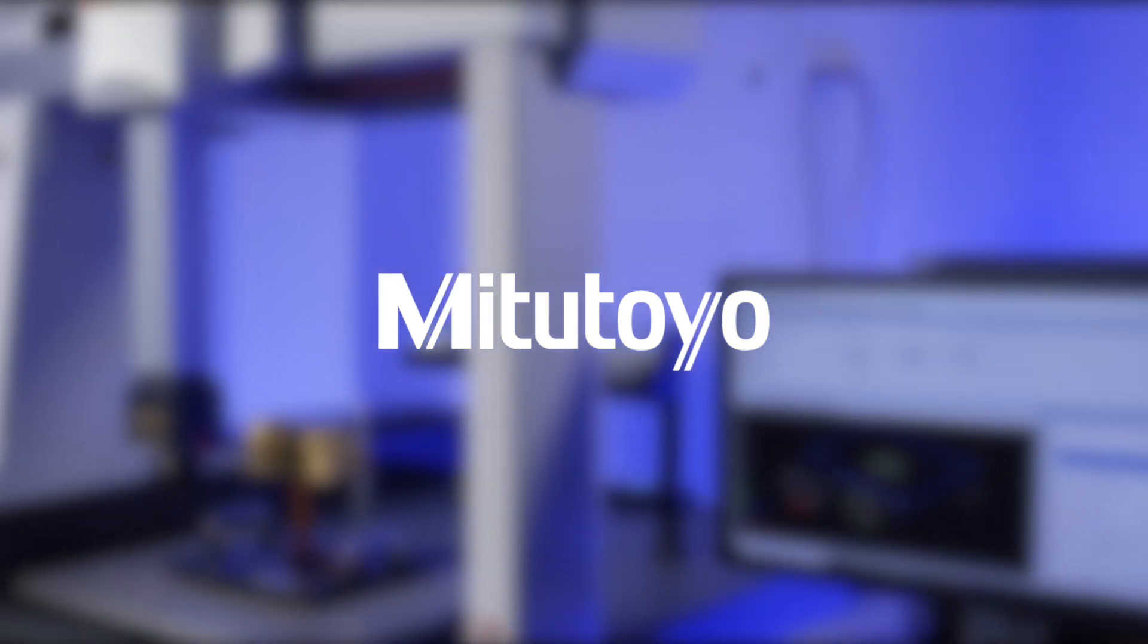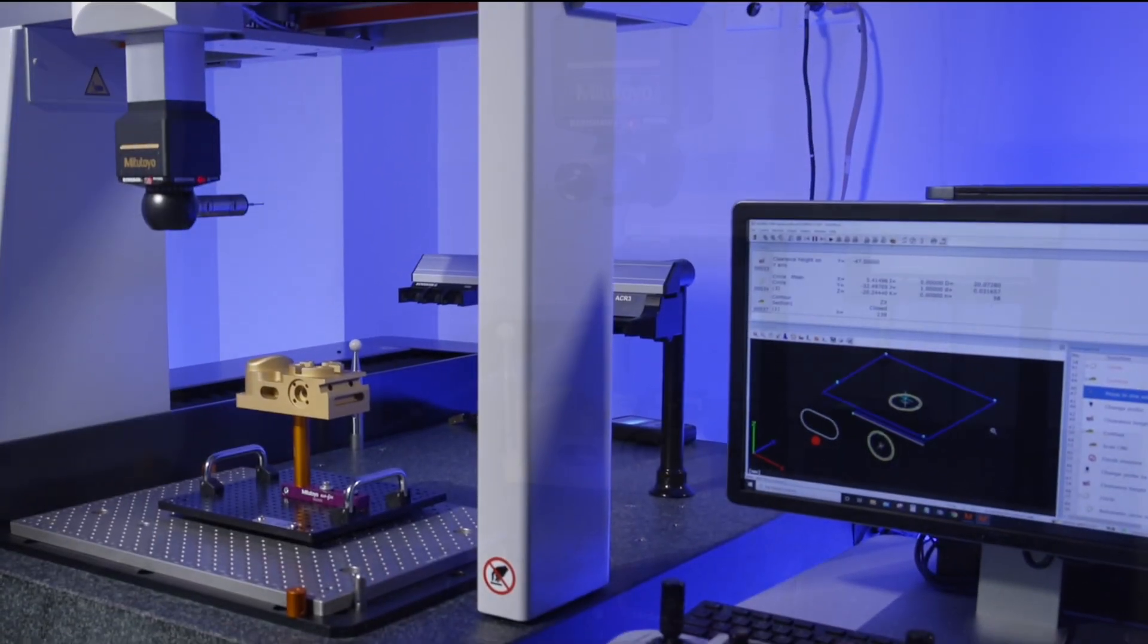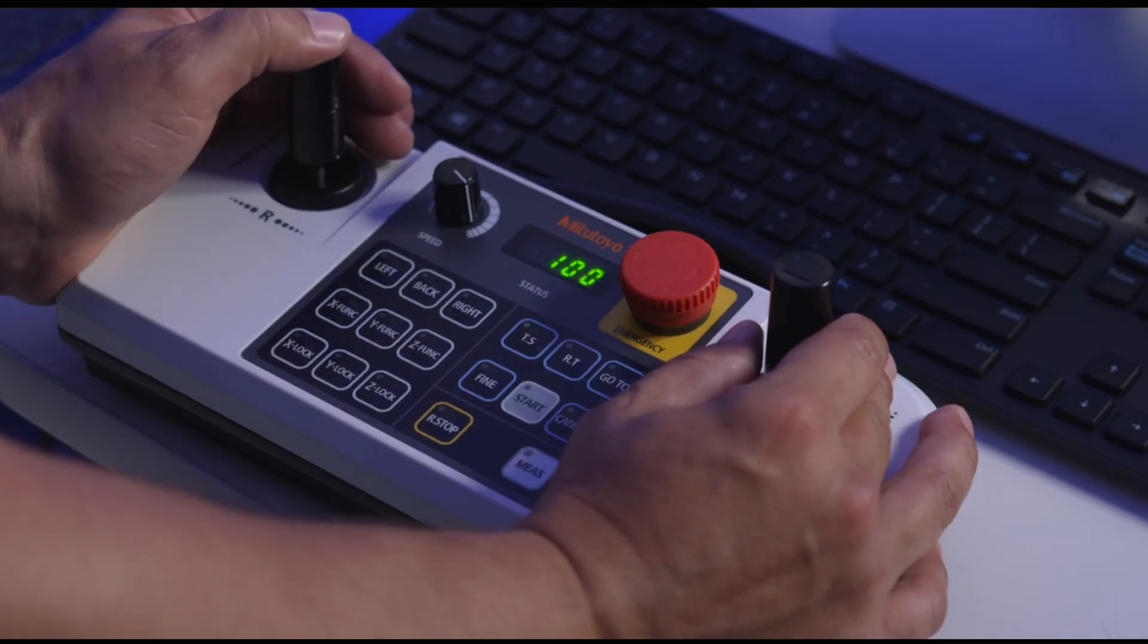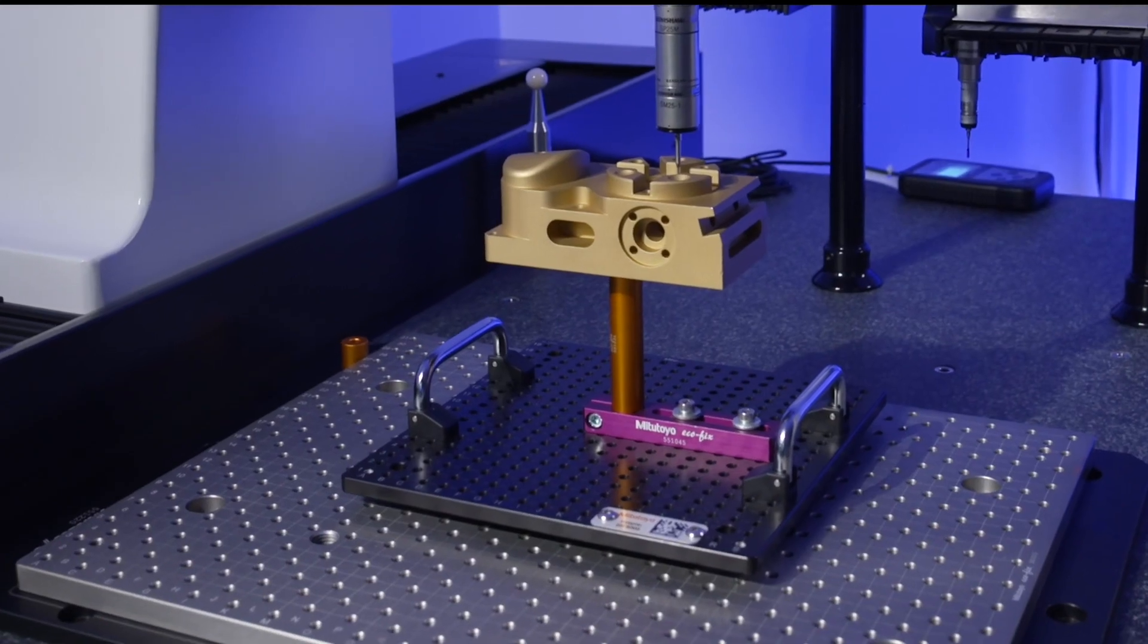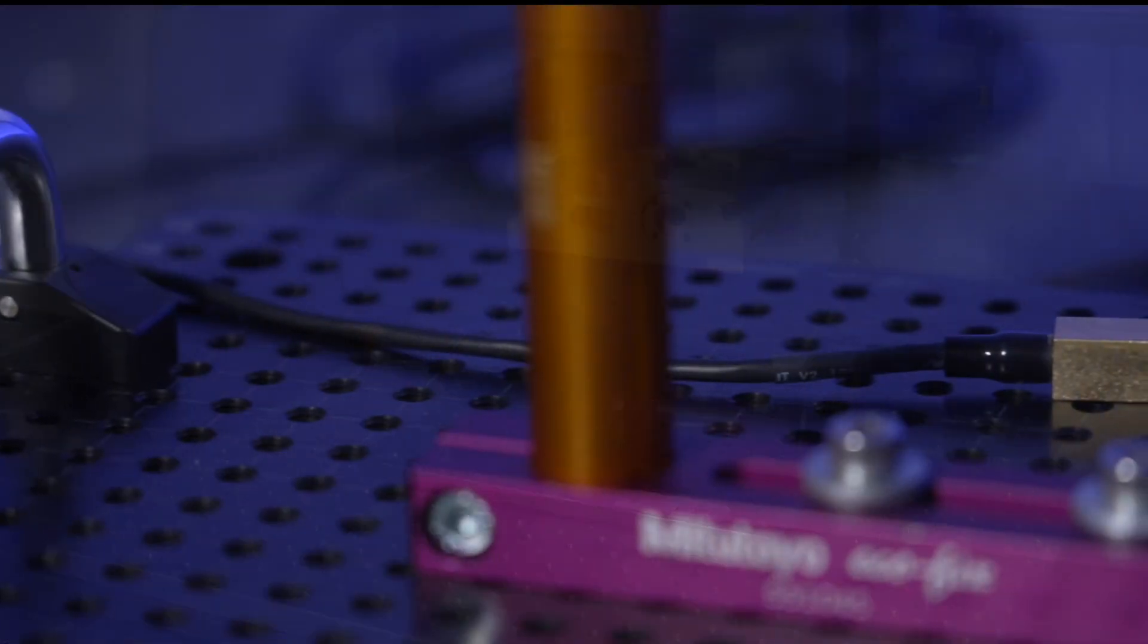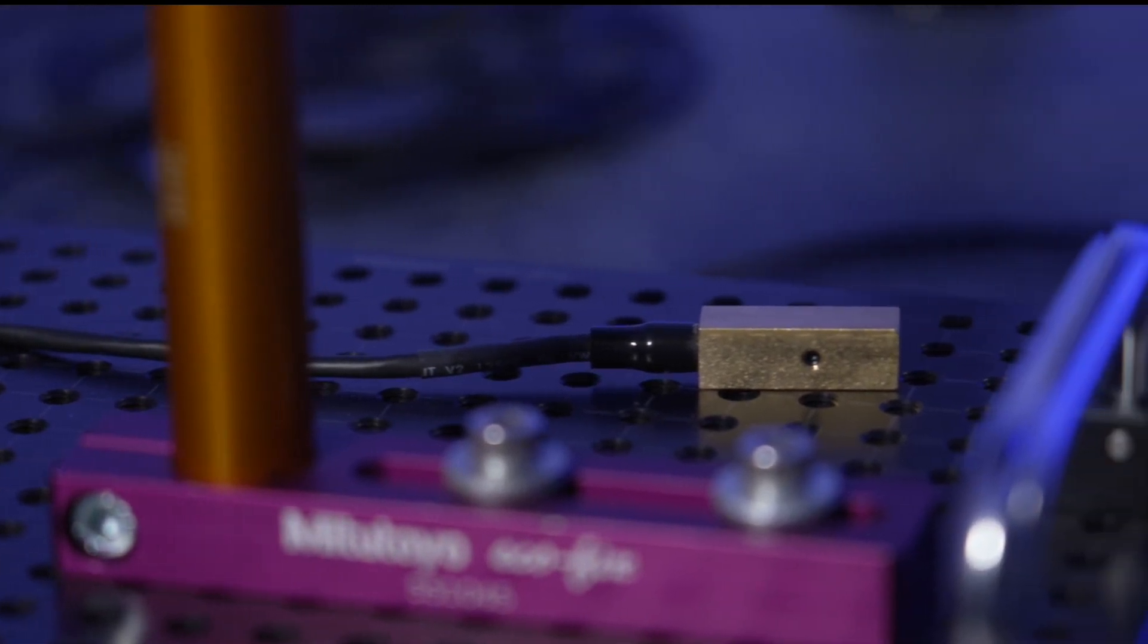The new Krista Apex-V coordinate measuring machine from Mitutoyo is designed for today's smart factory with faster measurements, higher accuracy and advanced information to assist production management.